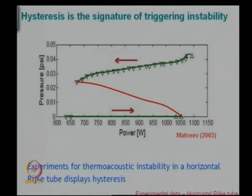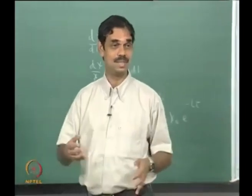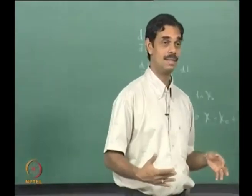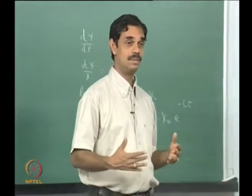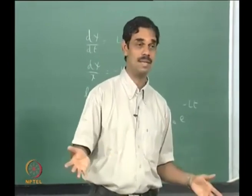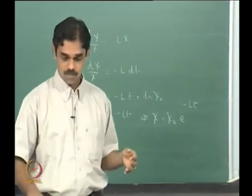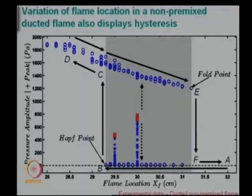Our theory — you can make any theory, but all theories are wrong because you always make a lot of assumptions. The question is whether it can explain something, whether there is any use to your theory. It has to predict something which is observed experimentally. We also see the same pattern — this is a Rijke tube result, and in a premixed flame also you push the flame and it becomes unstable.